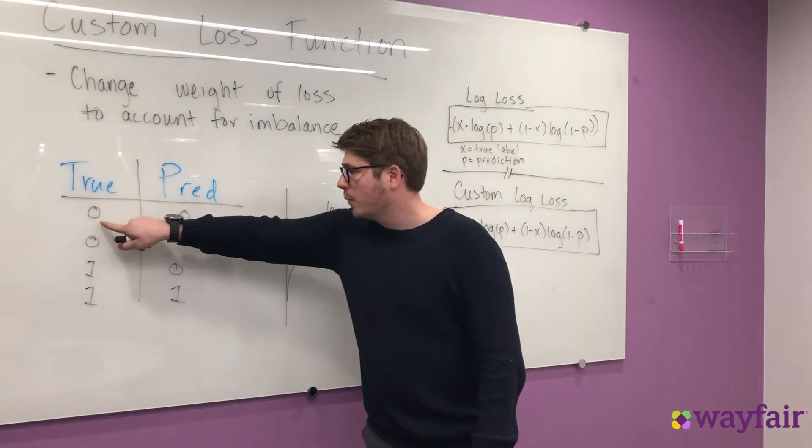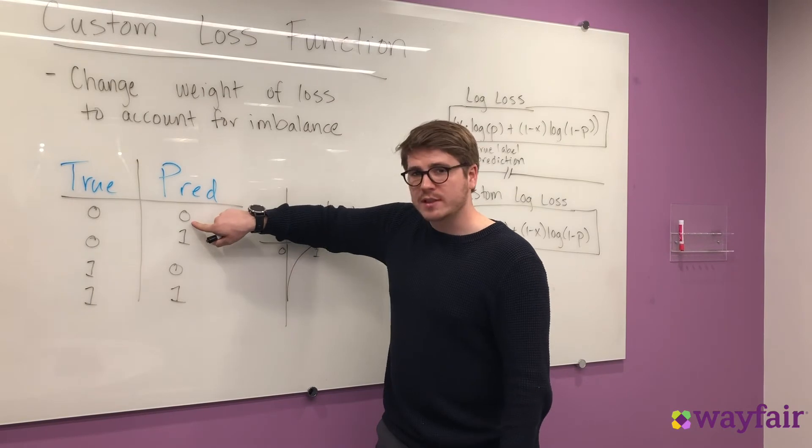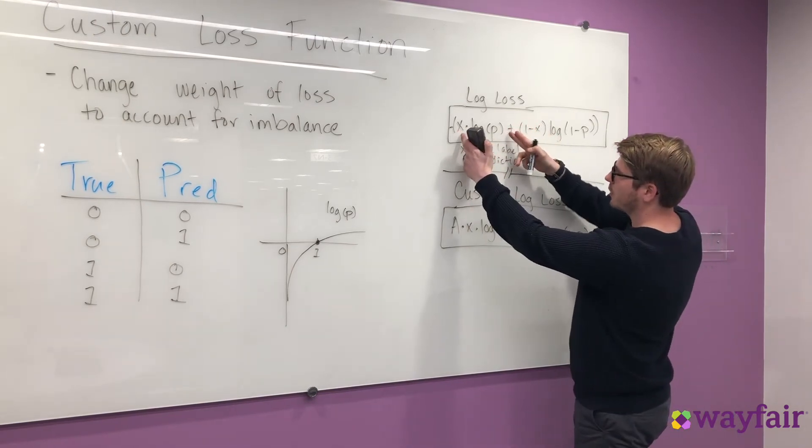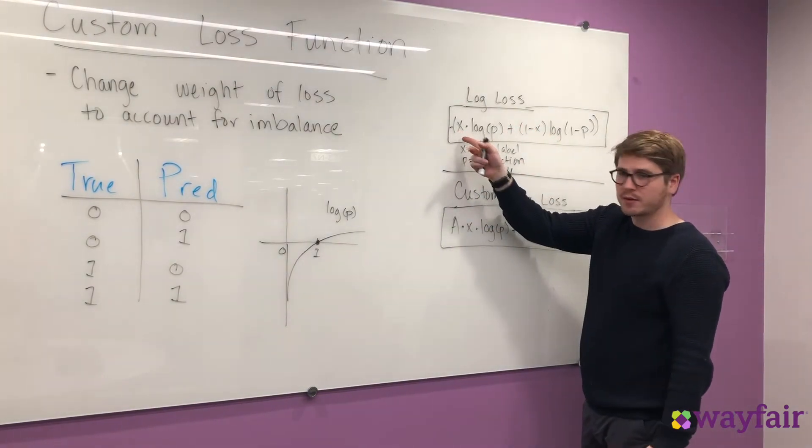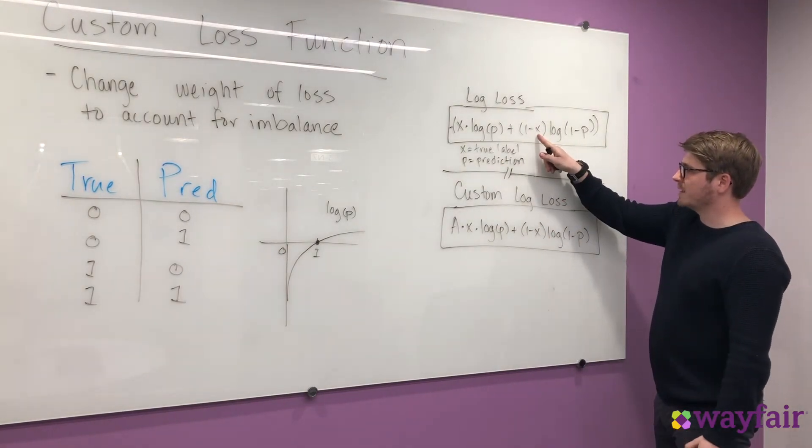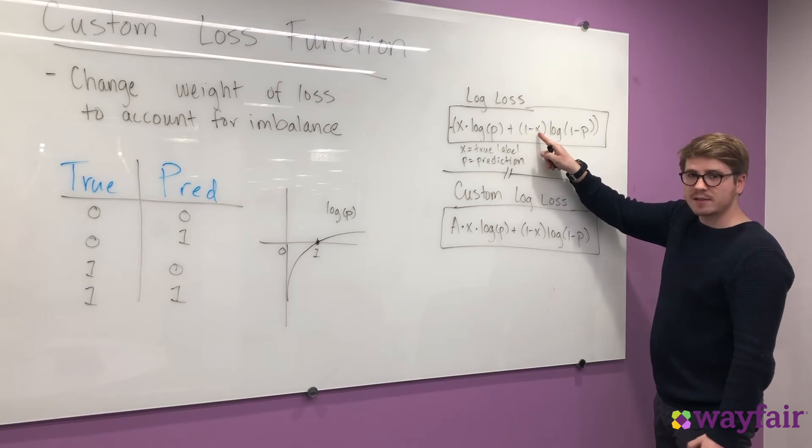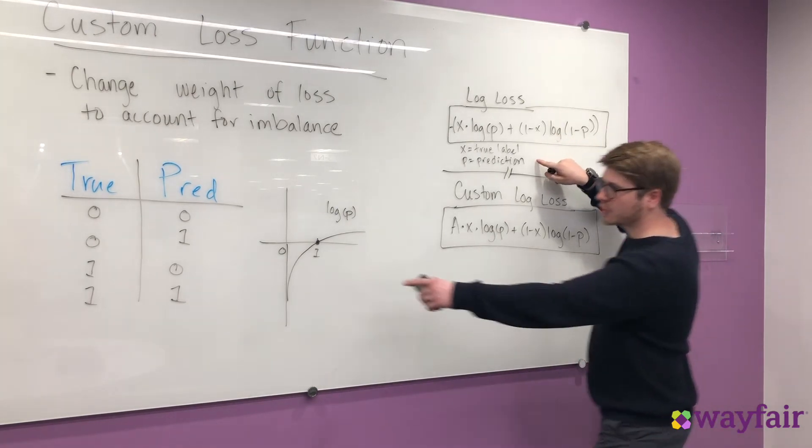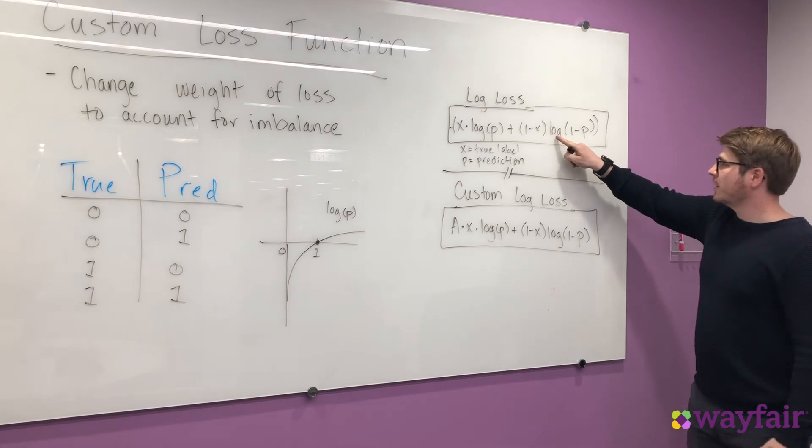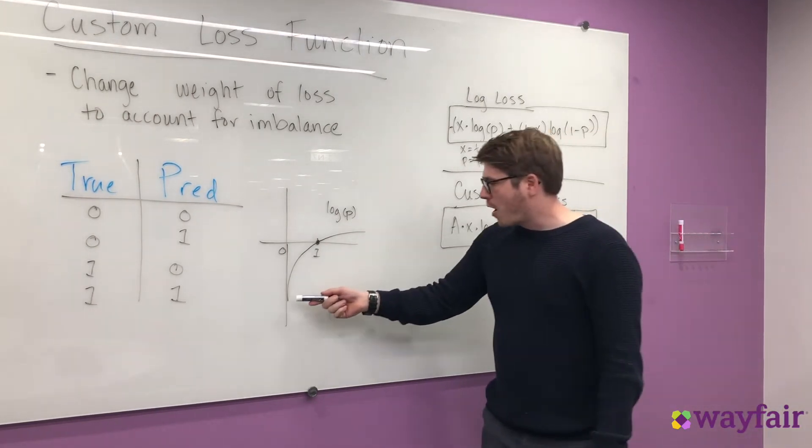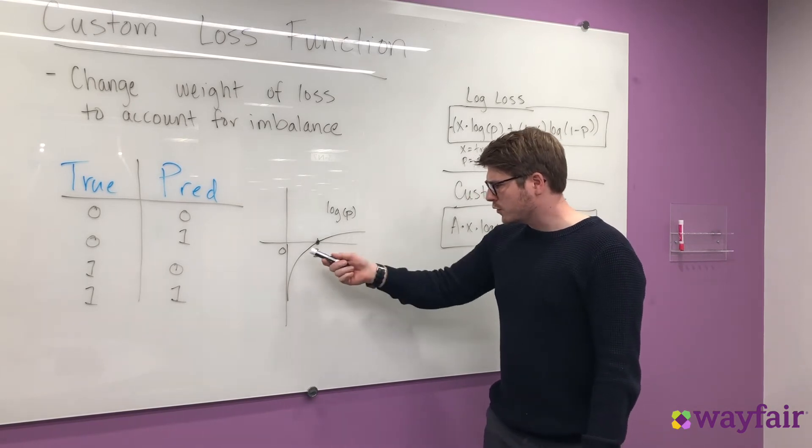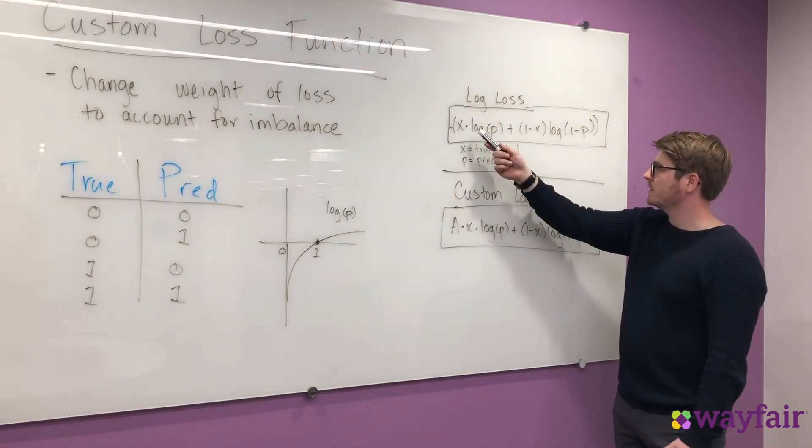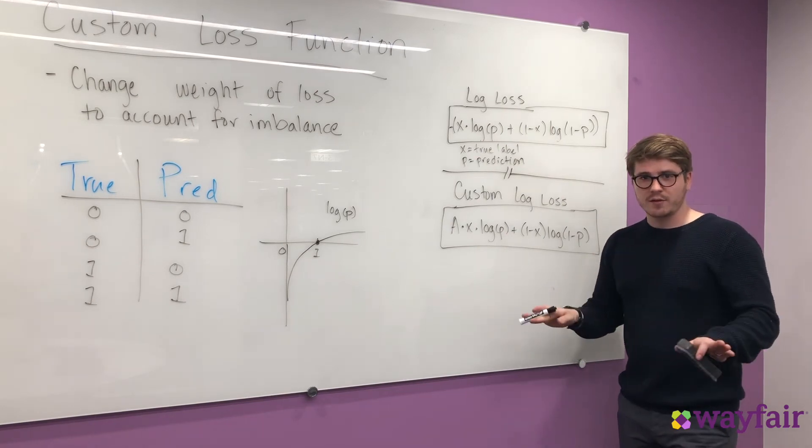So let's start with a case where we have a non-fraudulent order, and we predict that it's not fraudulent as well. So x here is 0, which means that this entire term is going to go to 0 because we're multiplying it by 0. So that drops out. The next term is 1 minus x. The true label is 0, so this is 1 minus 0, so this term matters. So what's inside of here? We have log of 1 minus p. If our prediction in this case is 0, then we're taking the log of 1 minus 0. Now remember that log looks like this curve. So if we're taking the log of 1, the y value of that is just 0. So the total value of this is 0 plus 0, which means our loss is 0. That's great. That's exactly what we want.